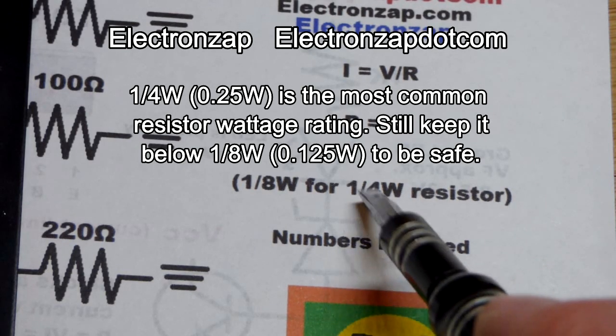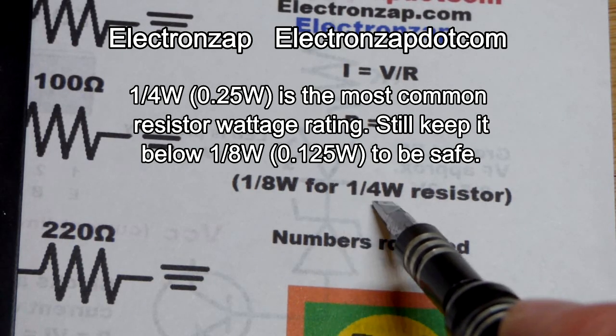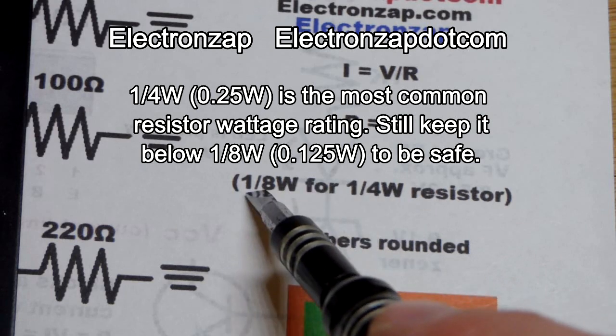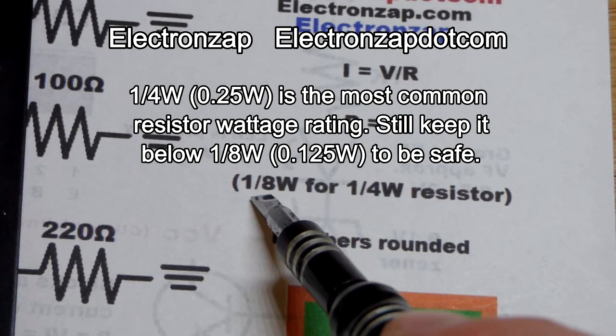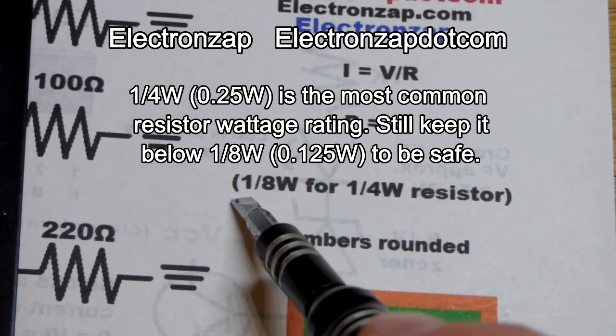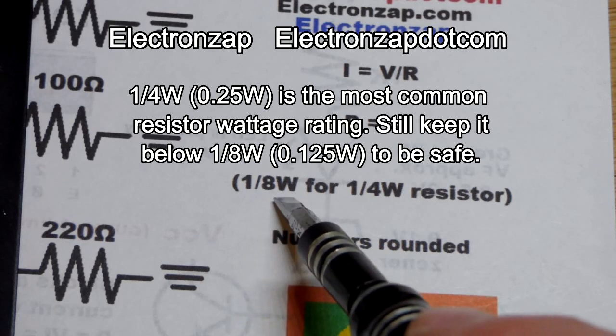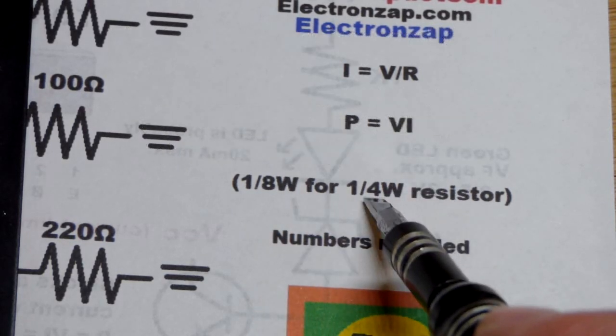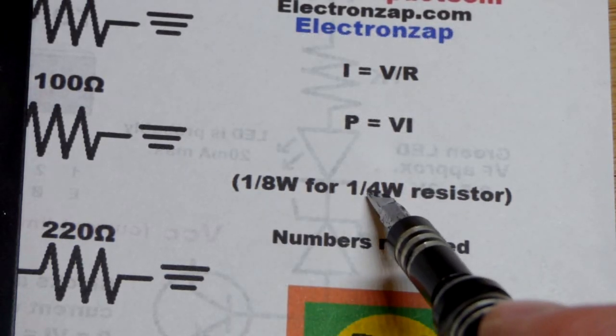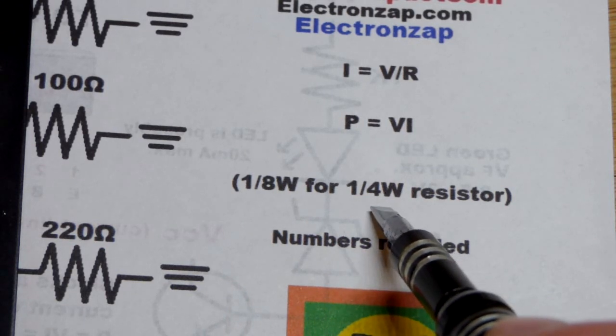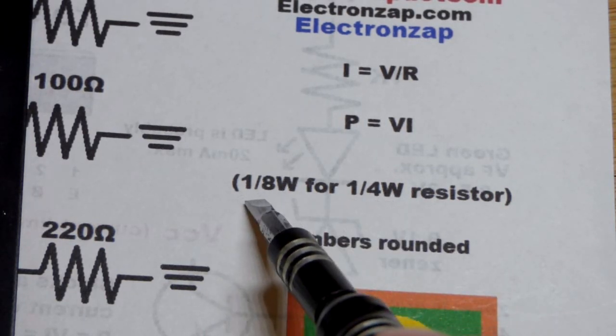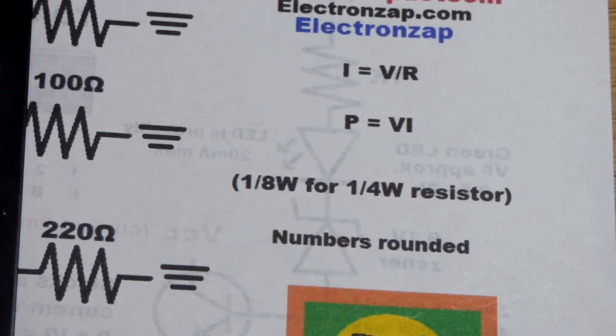These are quarter watt resistors, so that's 0.25 watts, but you still want to keep it an eighth of a watt or less. So 0.125 watts should be your goal, but you can go above an eighth of a watt for periods of time, but never exceed a fourth of a watt. Try to keep it above an eighth of a watt as short as possible.